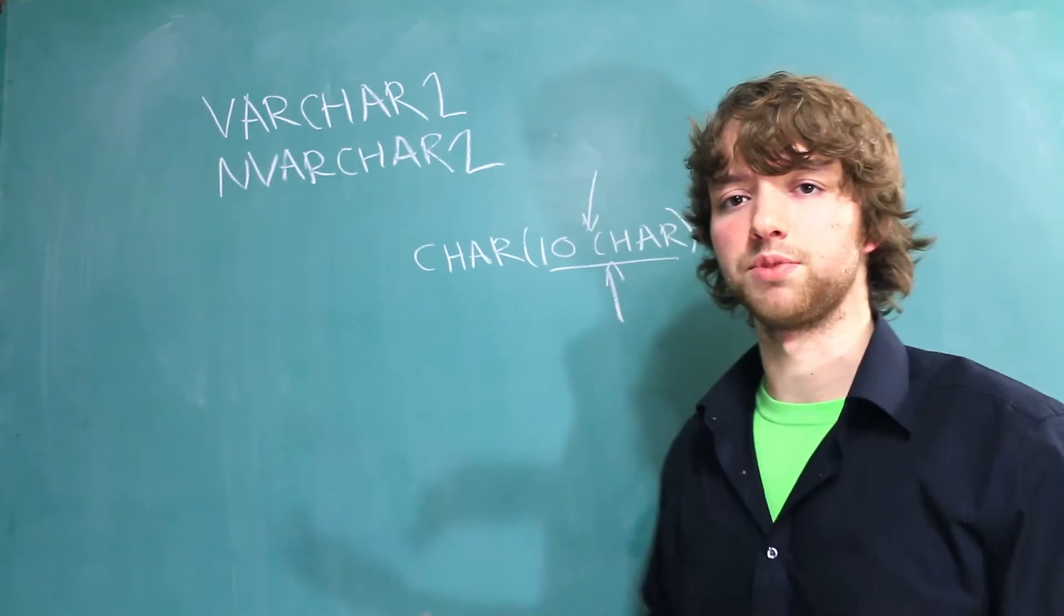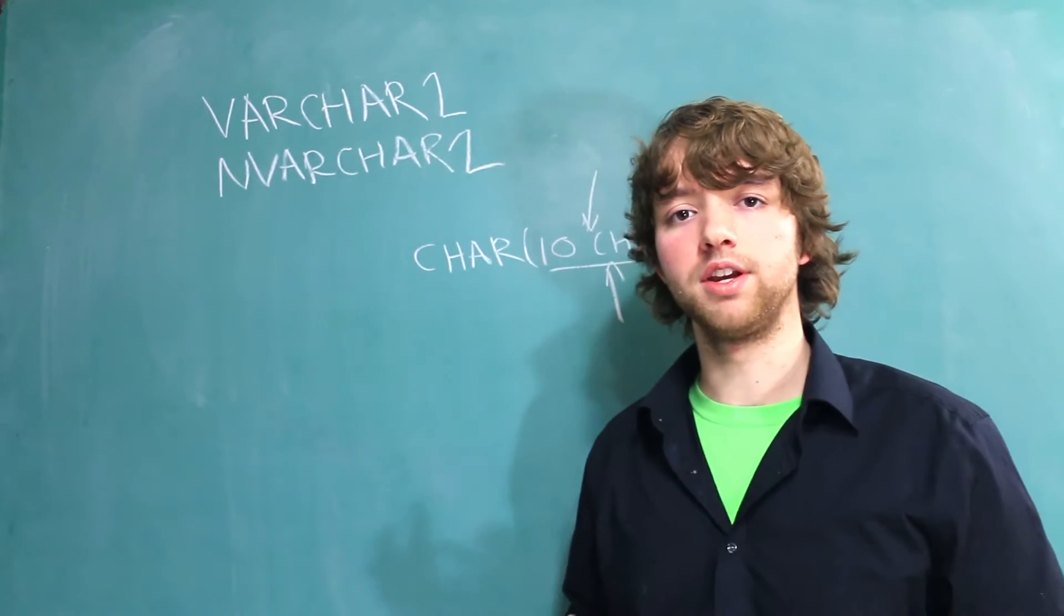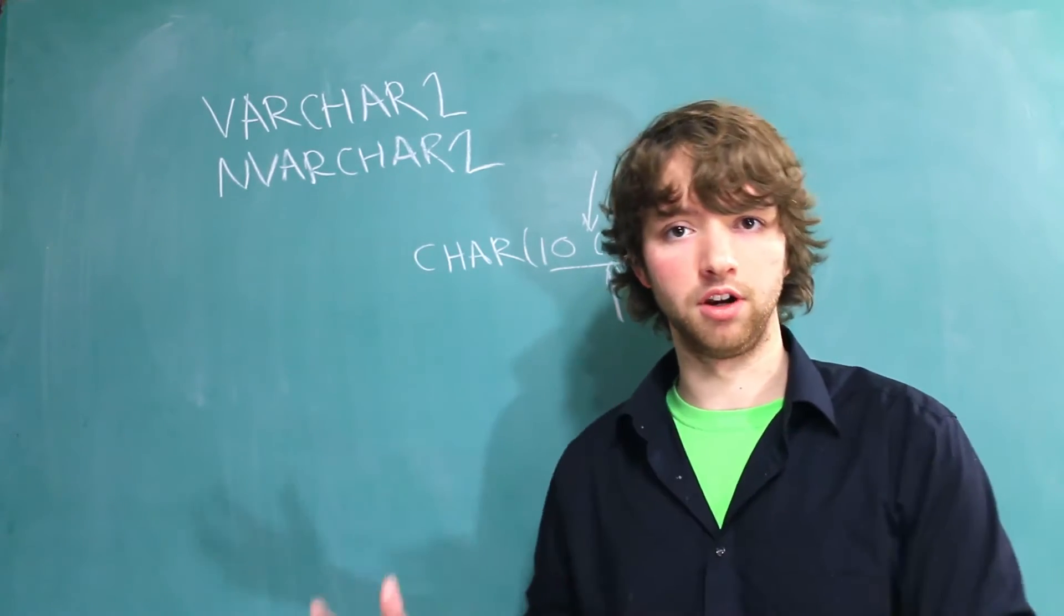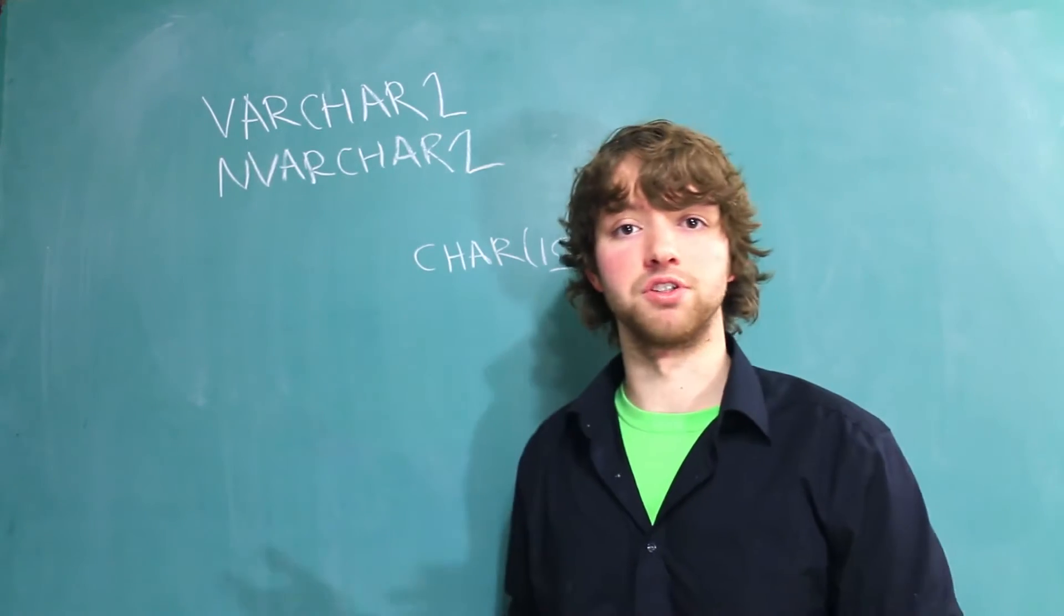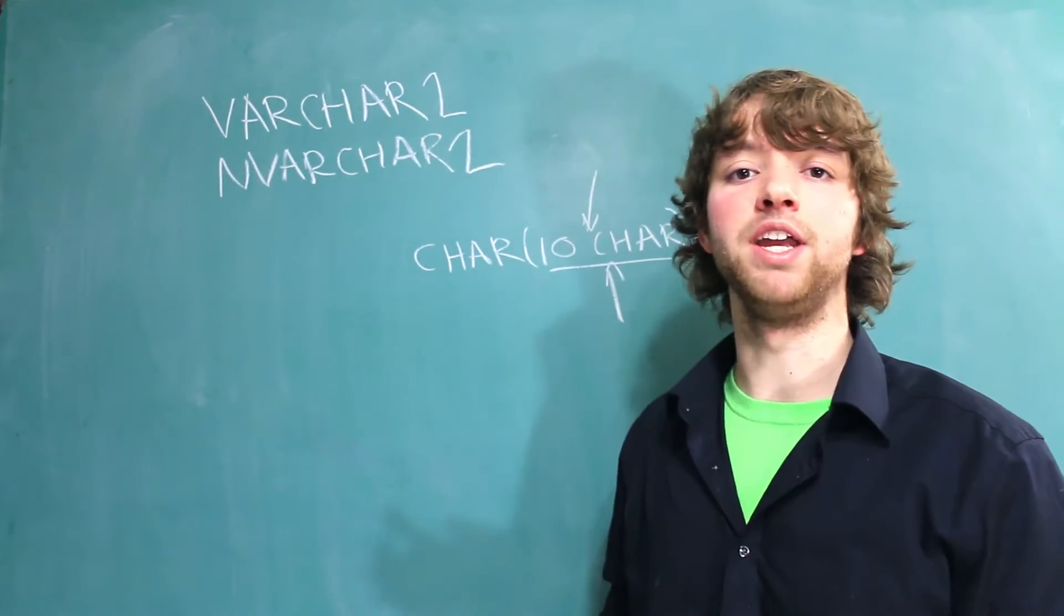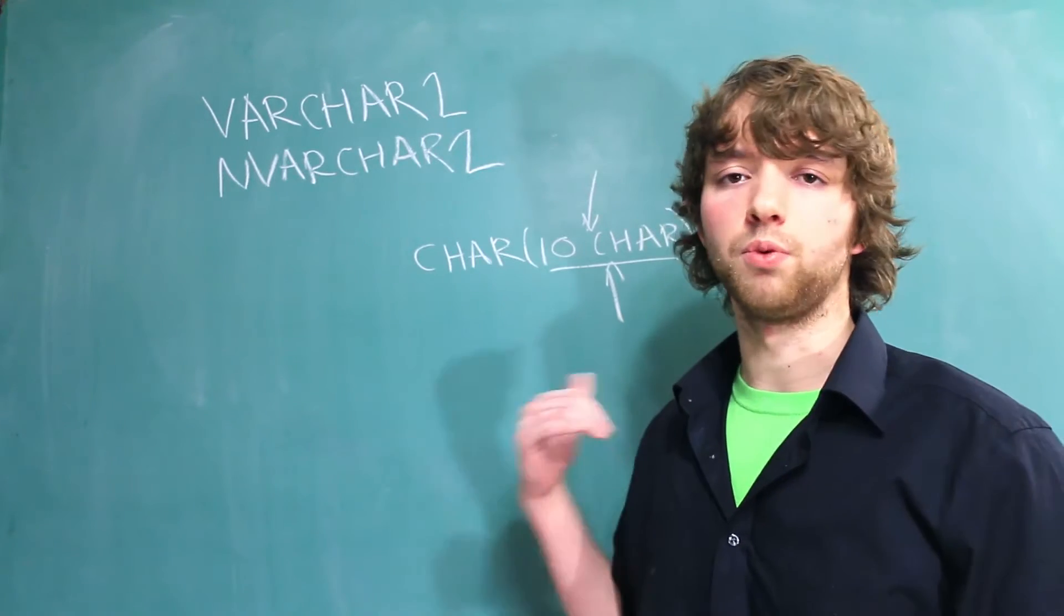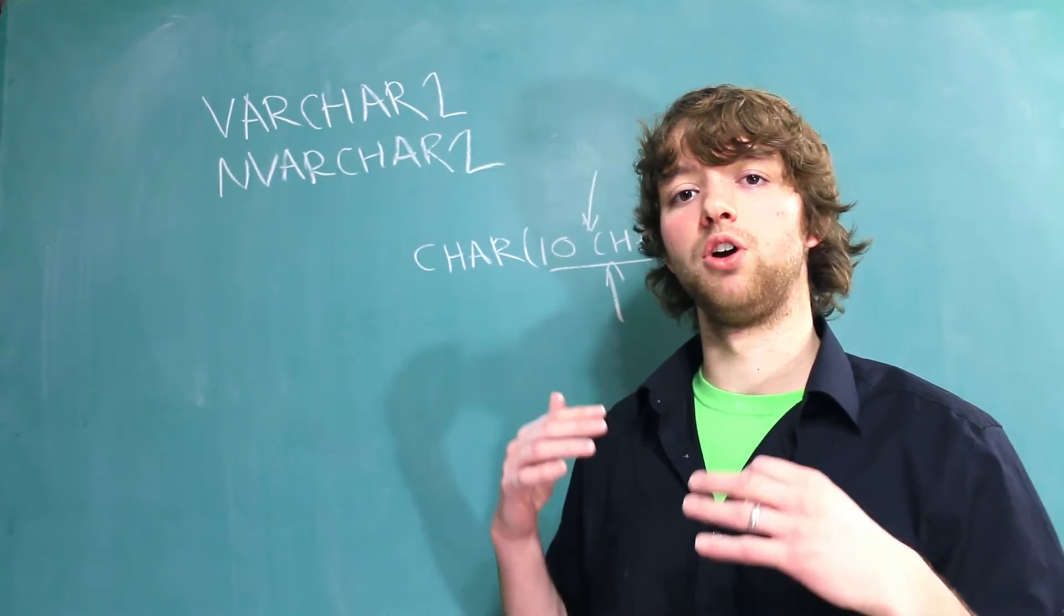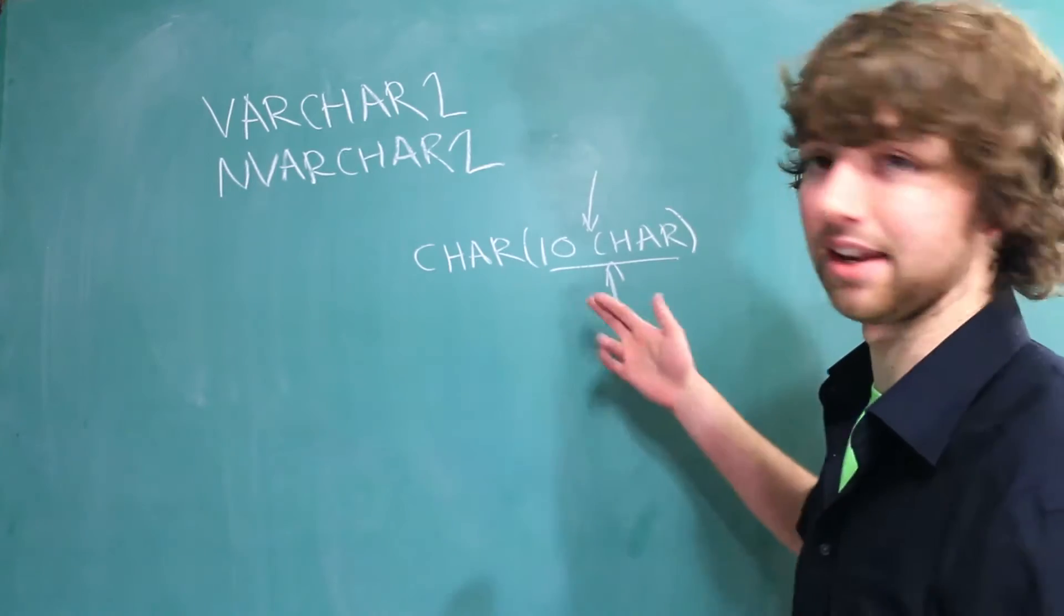Now in other database systems, the way char and varchar data types are stored is different. So the char might be stored one way and varchar might be stored another. For example, in MySQL, varchar takes up extra space because it has to have an extra byte or two to keep track of how long that data is. Oracle doesn't work that way because the char and the varchar2 column data types are stored exactly the same way. The only difference is the padding.